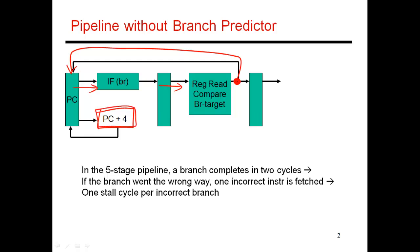So now we are going to improve upon this particular black box over here. Instead of just fetching the next sequential instruction in cycle two, I'm going to try and fetch an instruction which is more likely to be the correct branch target.